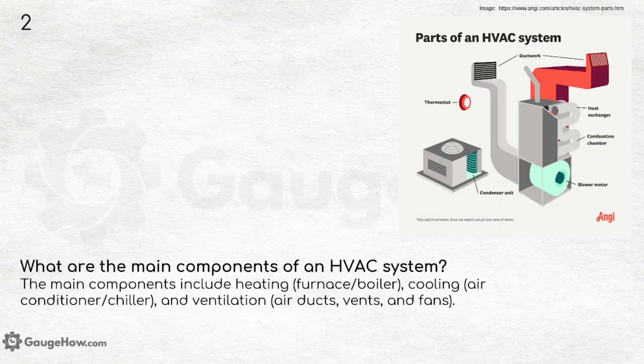What are the main components of an HVAC system? The main components include heating — that is a furnace or boiler — cooling, which is an air conditioner or chiller, and ventilation, including air ducts, vents and fans.